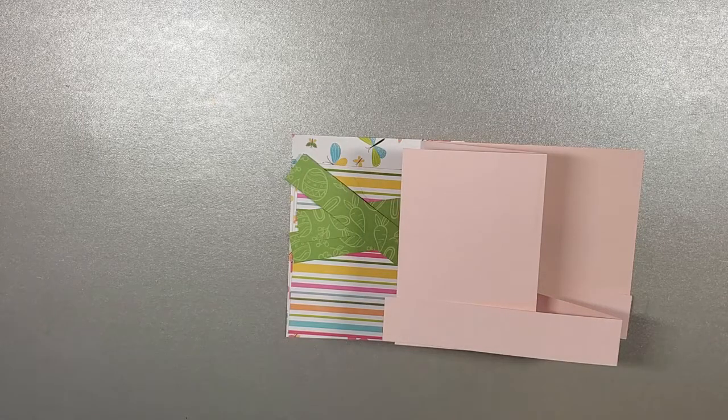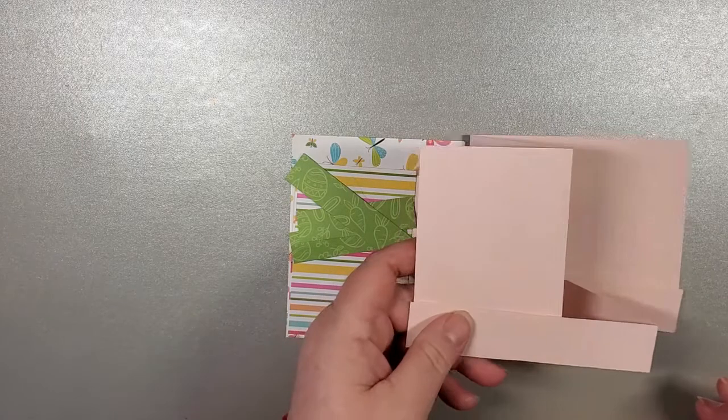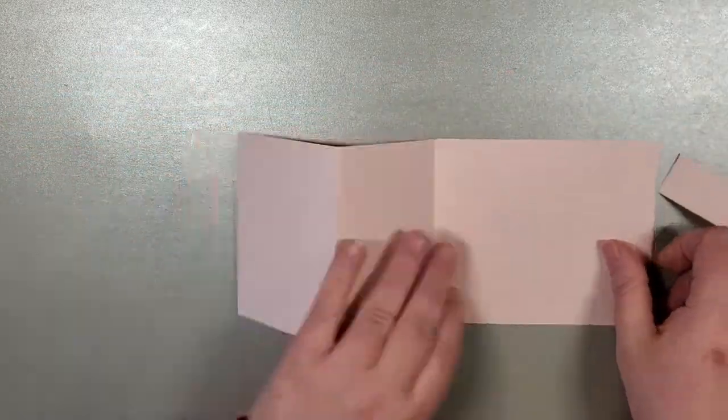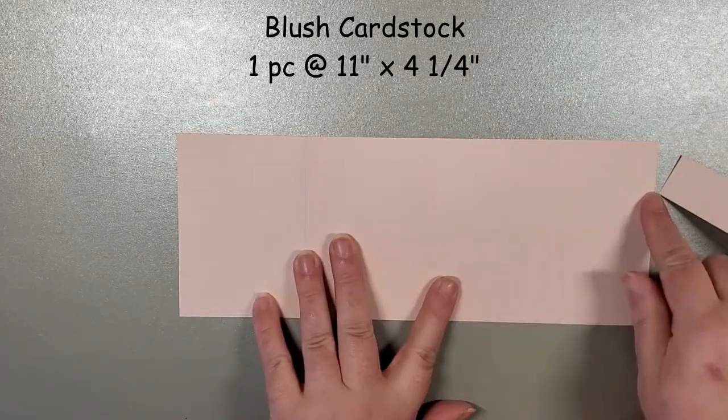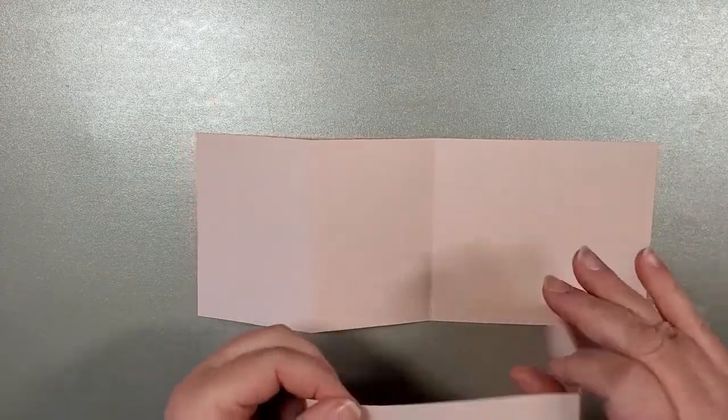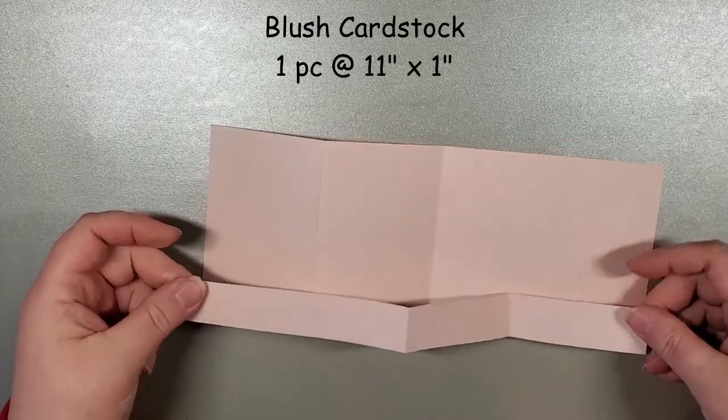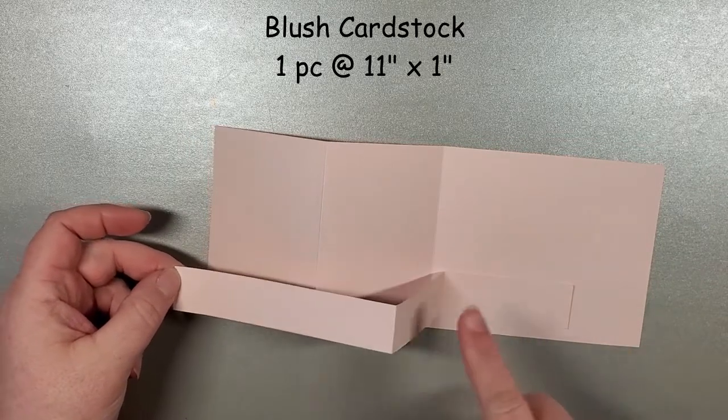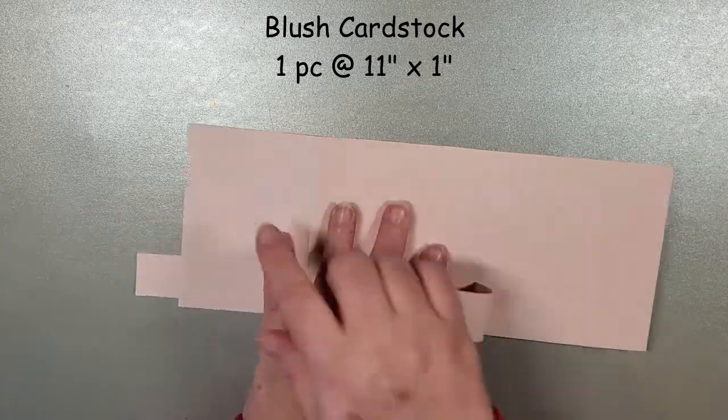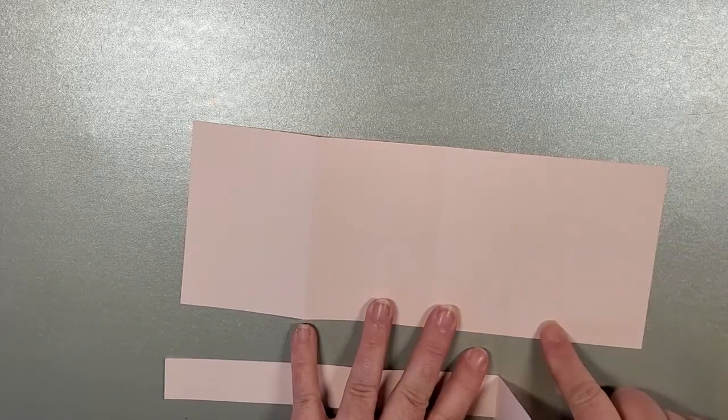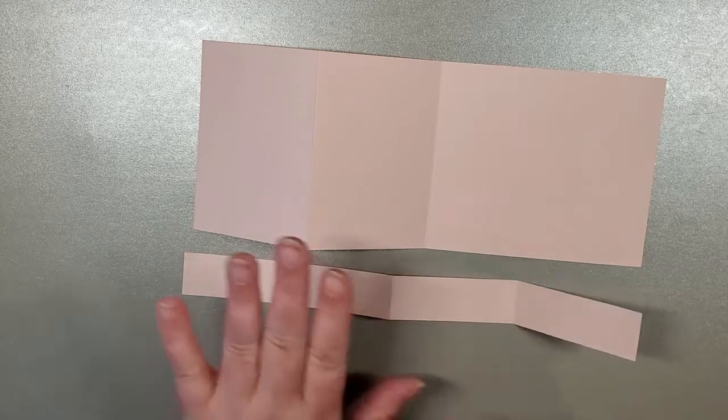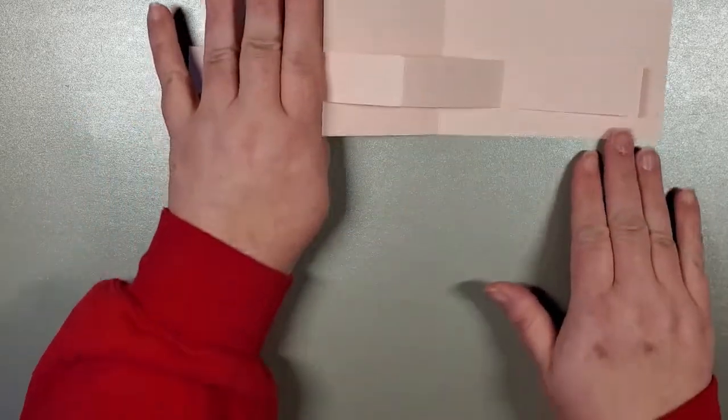We are going to start with this beautiful blush paper as our base. So we have two pieces. The first piece is 11 by 4 and a quarter. And this other piece, which is going to be our bottom strip for some extra adornment, is 11 by 1.